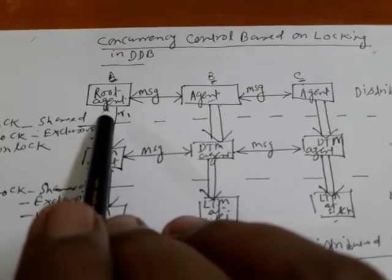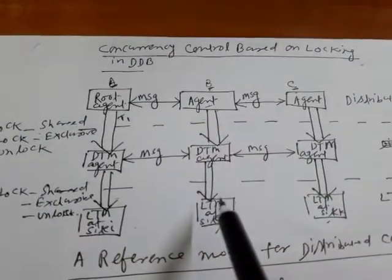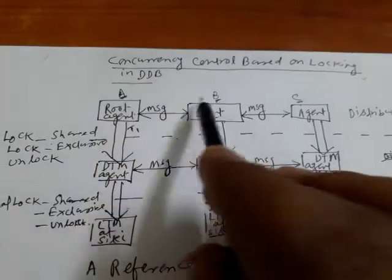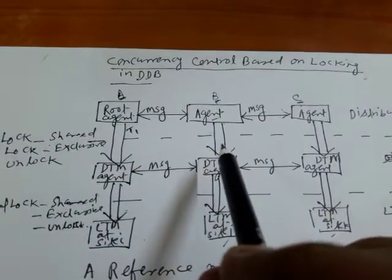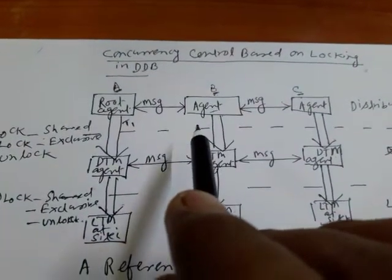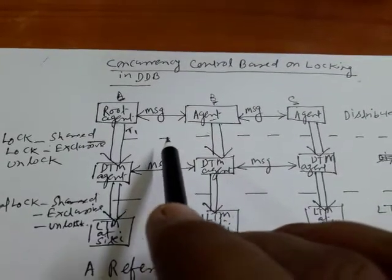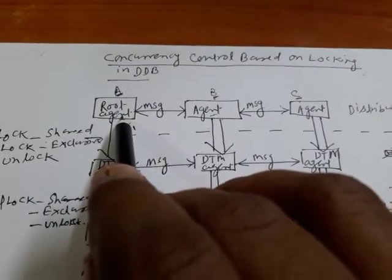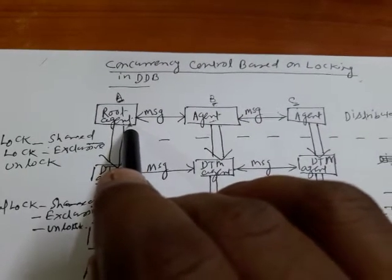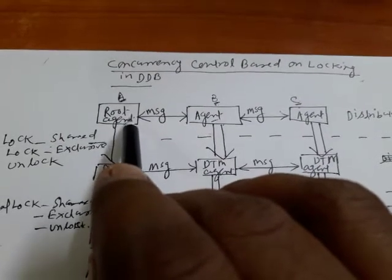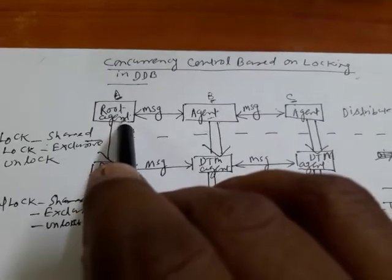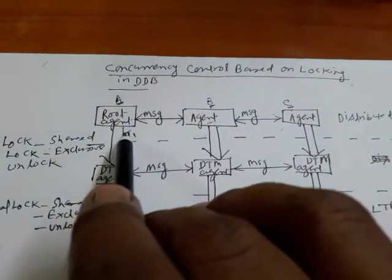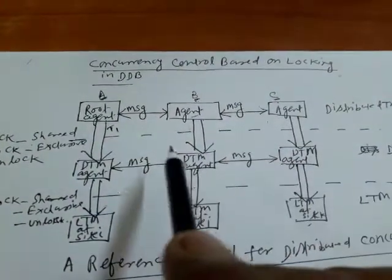We know the meaning of root agent, DTM, and LTM, which I explained in my previous video. Suppose I want to perform an online transfer from account A to B and C. For an online transfer, first we open the web page and click on transfer. An agent is a program that helps perform different types of operations in a distributed database. The root agent is where the transaction is initiated.